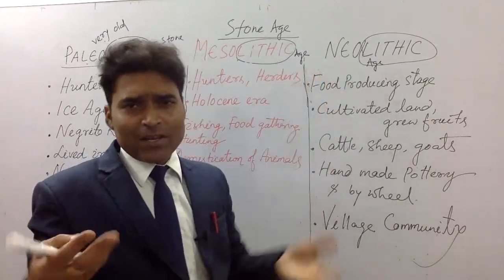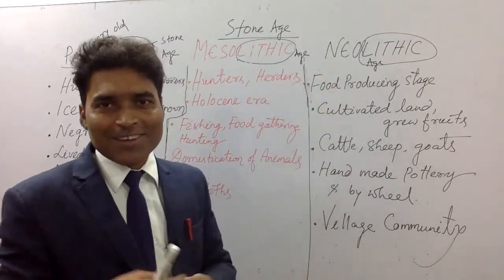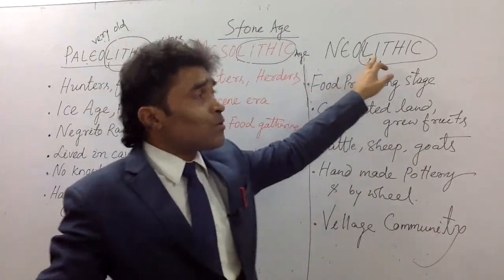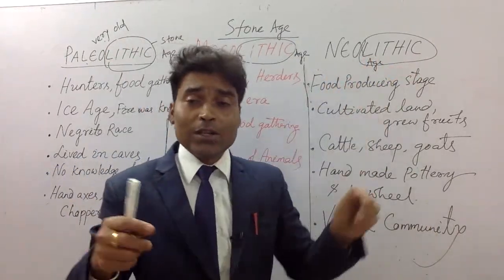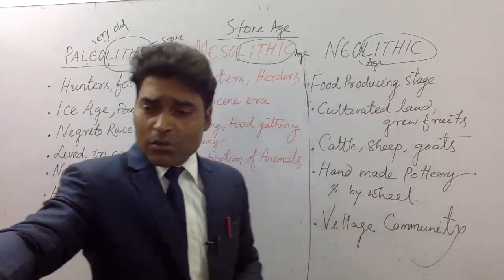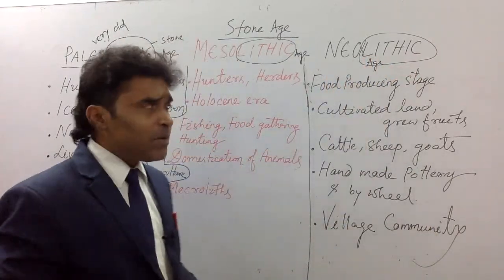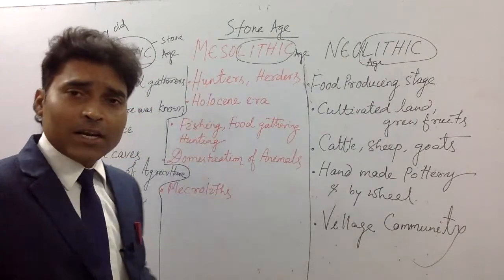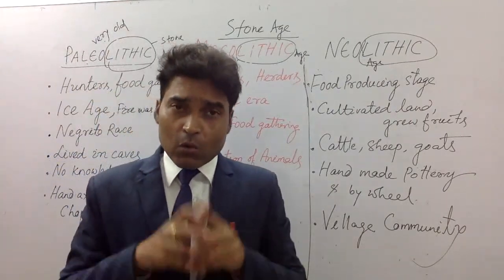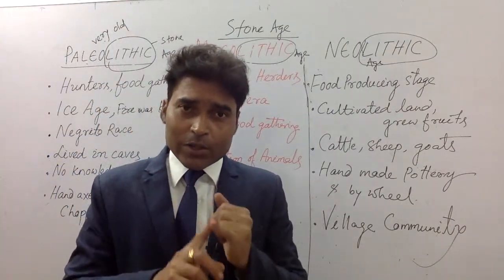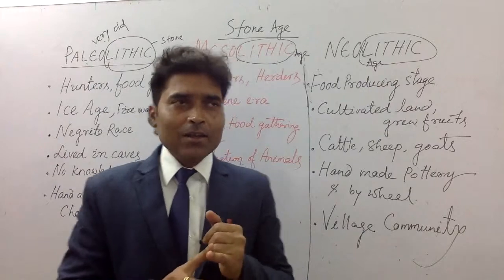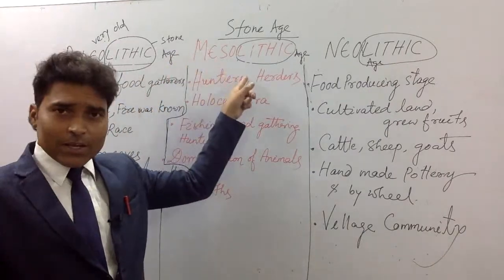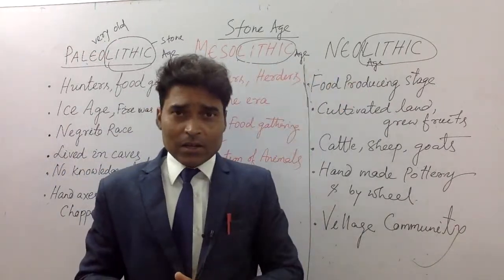'Neo' or 'New' means simply new. So Neolithic means the new stone age — 'Nuttana Prashtara Yuga.' So to summarize, Stone Age is classified into three categories: one is Paleolithic age, second is Mesolithic age, and third is Neolithic age.